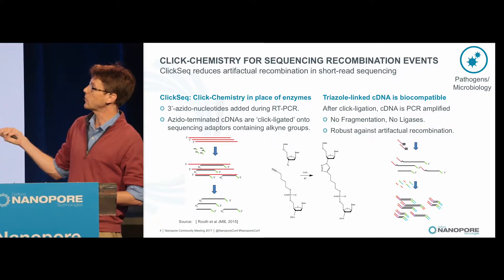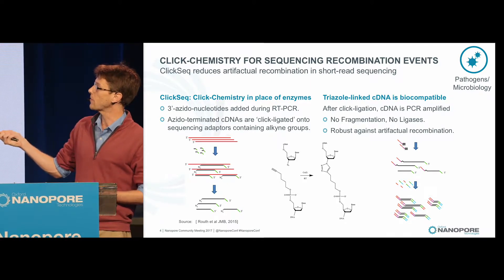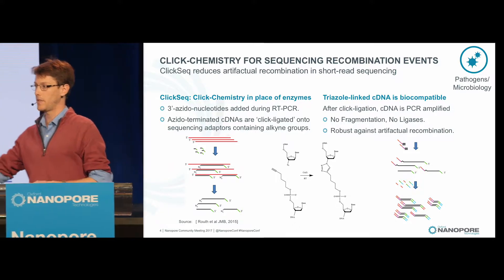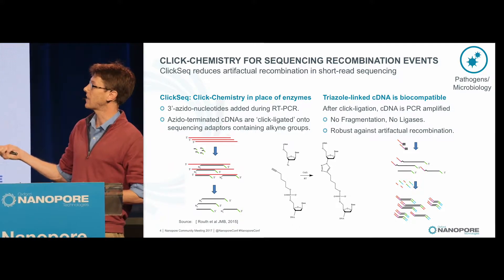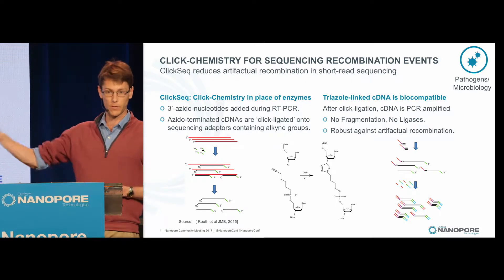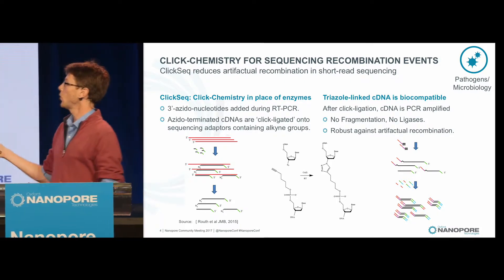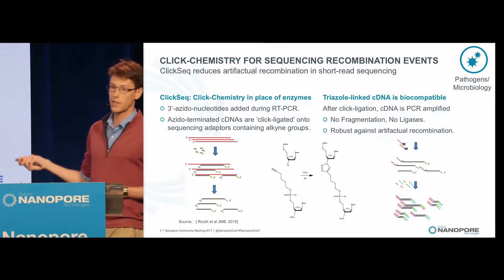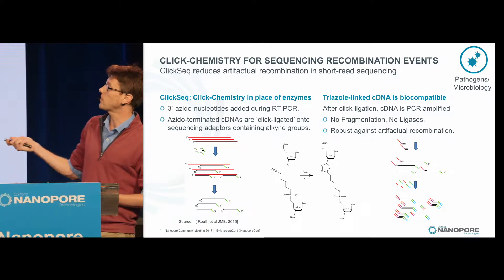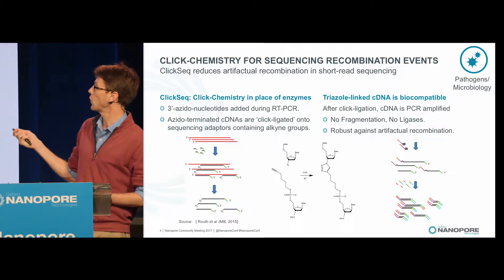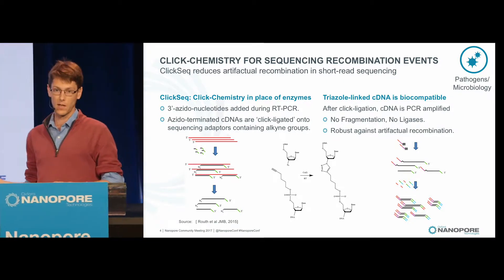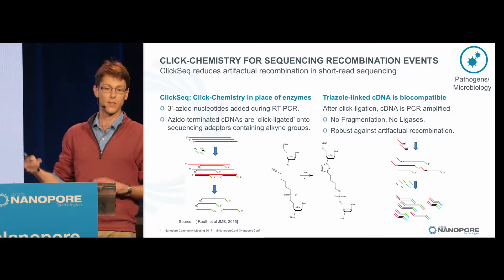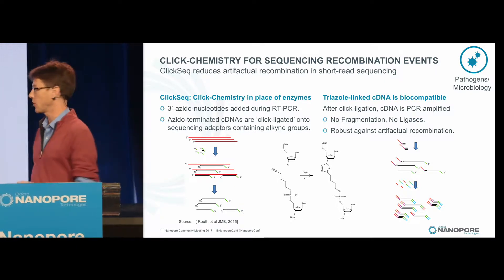For Illumina sequencing, we used our technique called CLIC-seq. Briefly, during our RT-PCR step, we spike in azido-nucleotides into our PCR, which generates stochastically terminated cDNA fragments with an azido group at the 3' end. We use click chemistry to click-ligate on a sequencing adapter and generate our Illumina libraries. The advantage is that because there's no fragmentation and no ligases, we are very robust against artifact recombination, giving us a sensitive tool to detect recombination events as we passage these viruses.